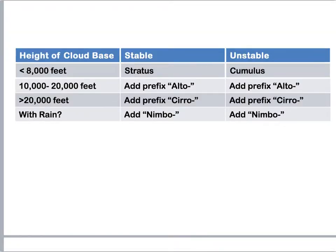So what do we mean by high or really high? Alto, which is high, is from about 10,000 to 20,000 feet up in the atmosphere. Cirro, which is really high, is greater than 20,000 feet — up to the top of the troposphere. Remember, all of our clouds occur in the troposphere. Occasionally strong thunderstorms can punch through the troposphere into the stratosphere, but just a tiny bit. To get anything with rain, you add the word nimbo or nimbus.